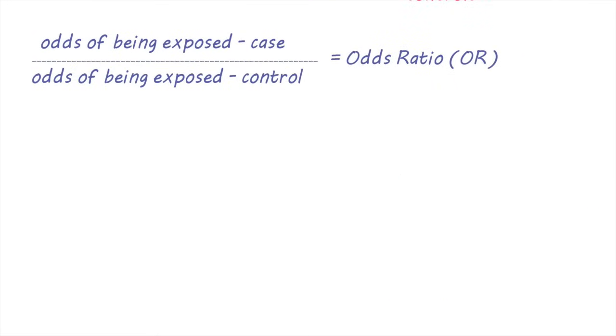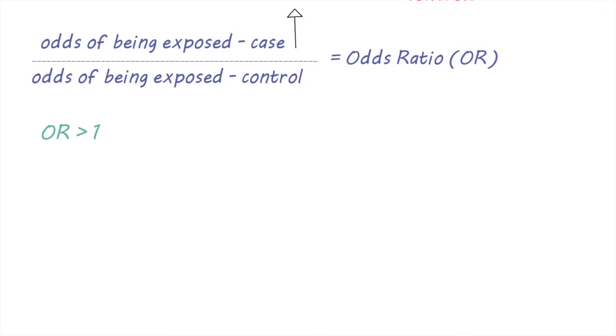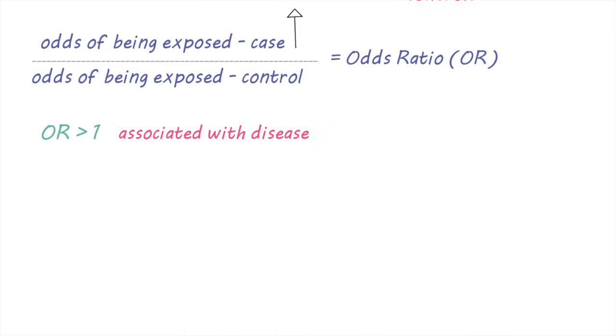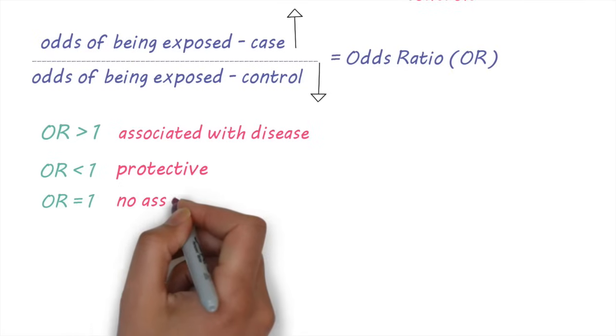An odds ratio of more than one means that people with the disease are more likely to have been exposed to that risk factor than people without the disease. This suggests that it could be a possible cause of the disease. An odds ratio of less than one suggests that it's a protective factor and one suggests no association.